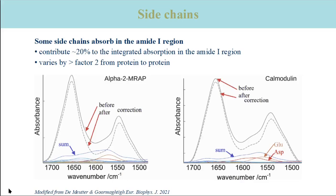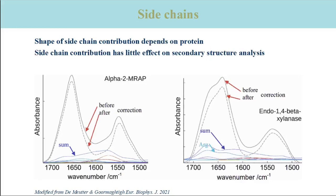Not only the amide-1 vibrations absorb in the amide-1 range — side chains also absorb here and contribute on average 20% to the integrated absorbance. This contribution varies substantially between different proteins depending on their side chain composition. The slide shows the spectra of two proteins, where the dark blue line is the spectrum of the side chains. The contribution of side chains is stronger for the protein on the left-hand side because it has relatively more side chains that absorb in the amide-1 range. The shape of the side chain spectrum also differs because arginine contributes more to the right spectrum.